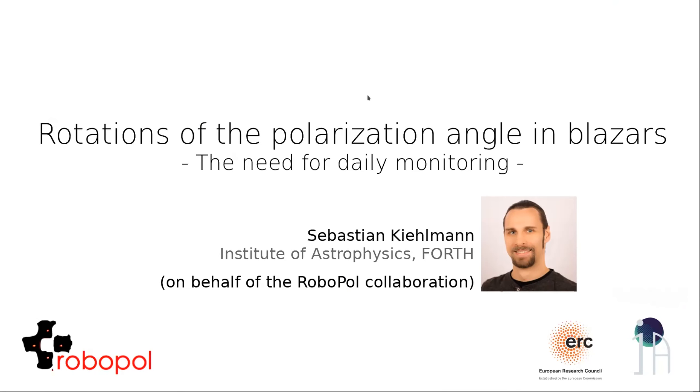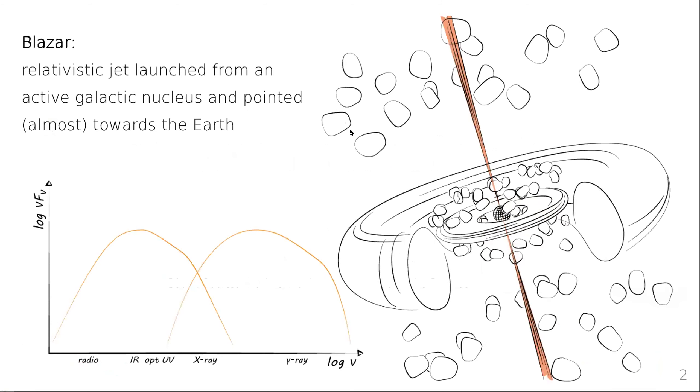Let's continue with blazars and optical polarization. Magnetic fields play a major role in jet physics from launching the jet in close vicinity of the supermassive black hole through the collimation and acceleration of the jet.